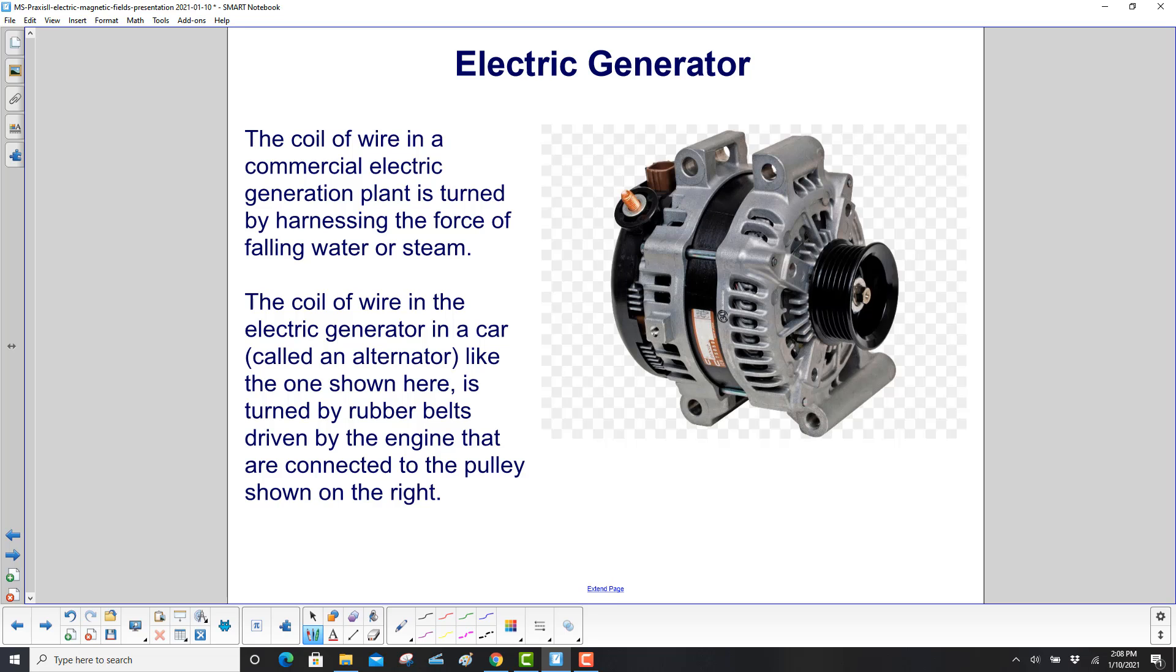The coil of wire in the electric generator in a car, also known as an alternator, and here's the coil. It's inside here, inside these big gray metal plates.